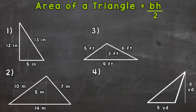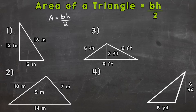So let's hop right in to number one. The first thing we want to do is write out our formula for the area of a triangle: area equals base times height divided by 2. Whenever you have two letters right next to each other in a math problem or in an algebra problem, that means multiplication — B times H, base times height.